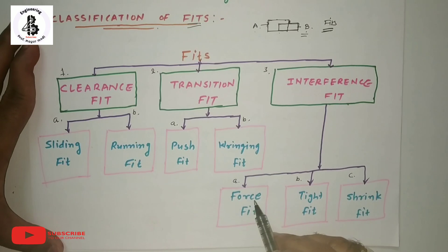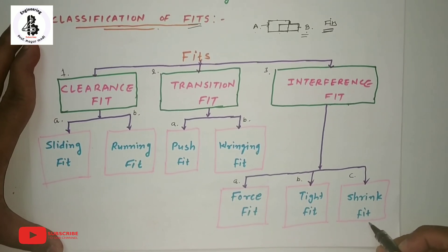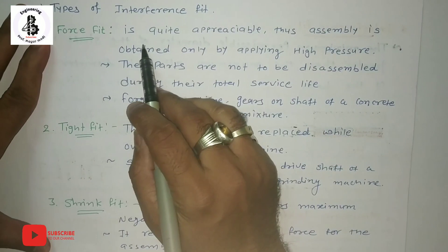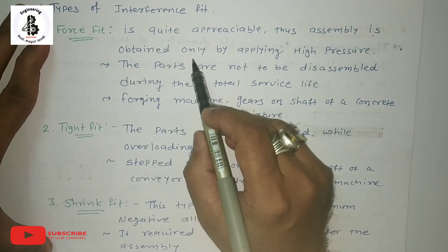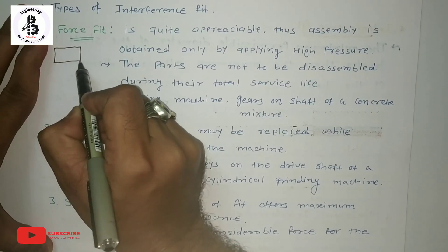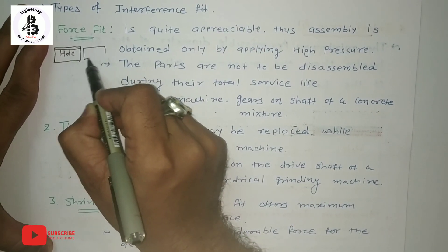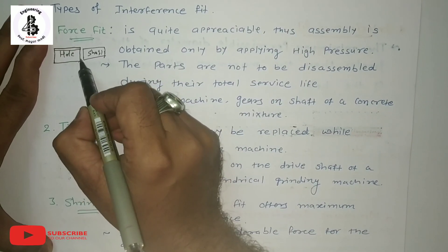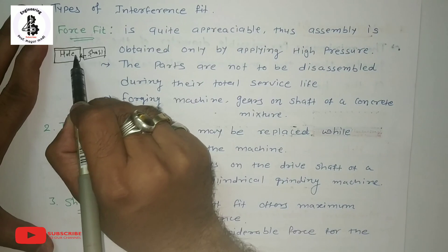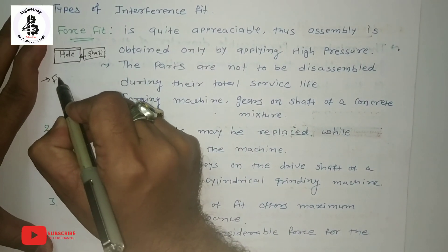Interference fit has three sub-types: first is force fit, second is tight fit, and third is shrink fit. For force fit, the assembly is obtained only by applying high pressure. If there is a hole system and a shaft system, by the application of high pressure the shaft is fitted into the hole. The parts are not to be disassembled during their total service life — it is considered a fixed joint.